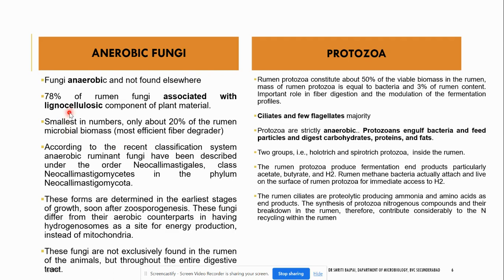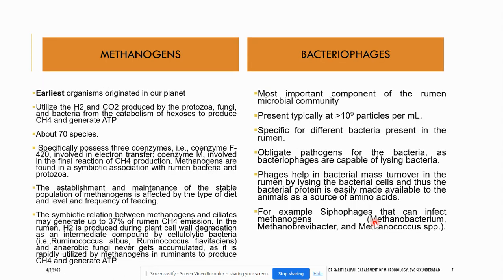Anaerobic fungi are also associated with lignocellulose digestion, but their number is very few — they are smallest in number. Protozoan ciliates and flagellates engulf bacteria and feed particles and digest carbohydrates, proteins, and fat. Protozoans are also important for the recycling of nutrients going on inside the rumen of cattle.